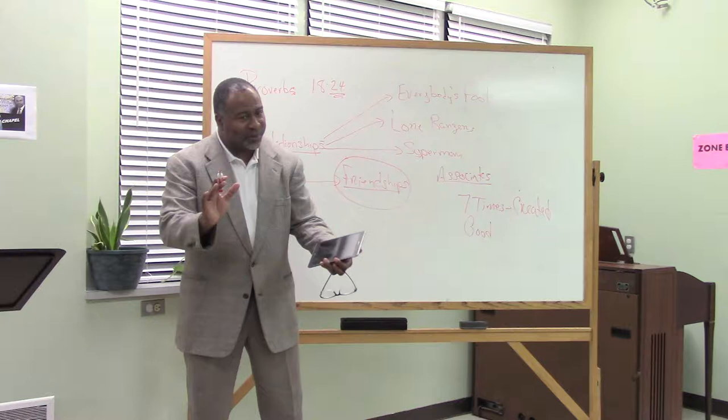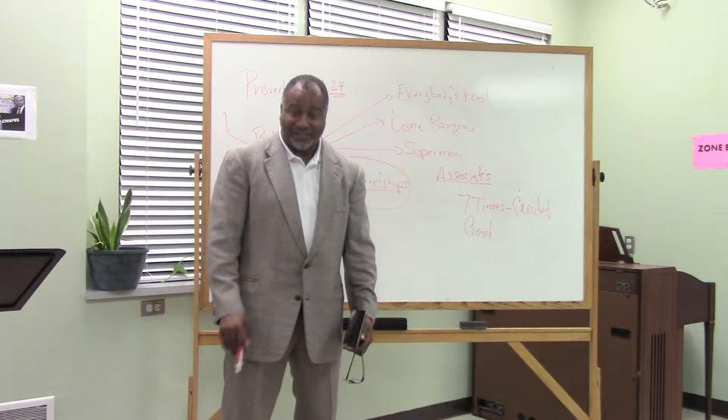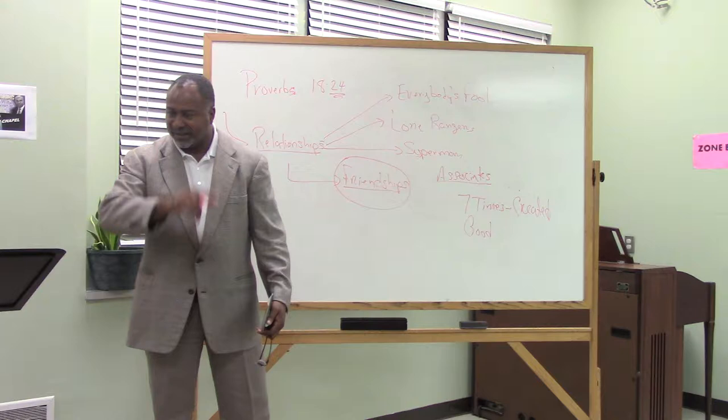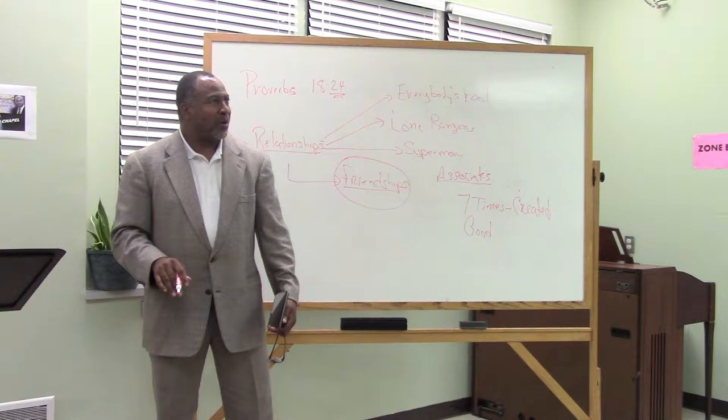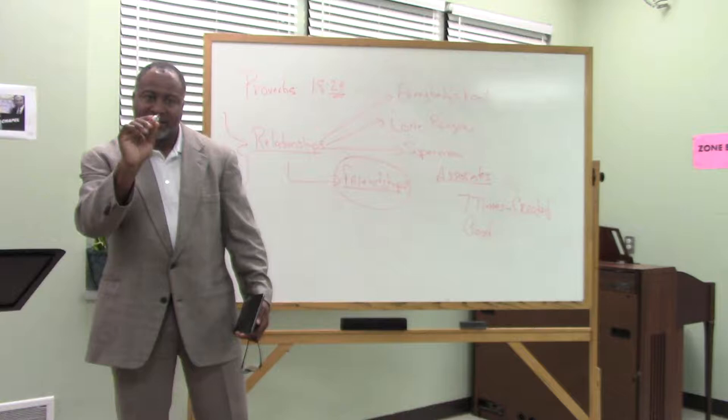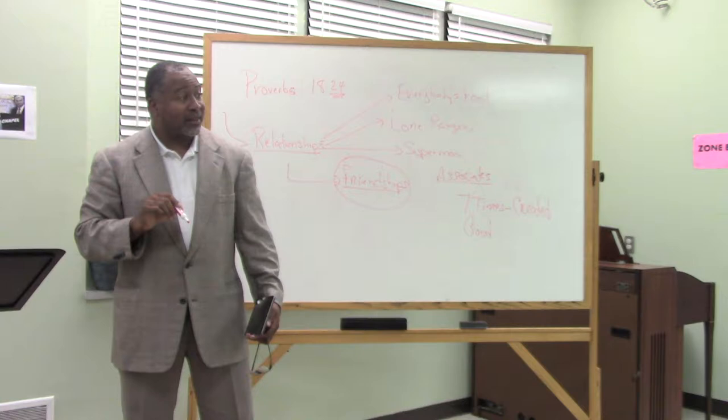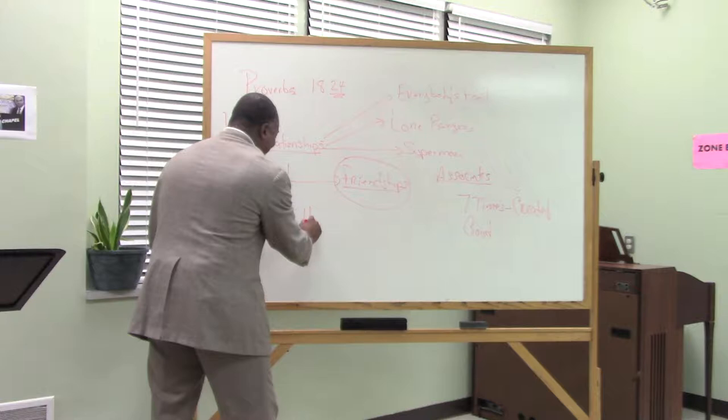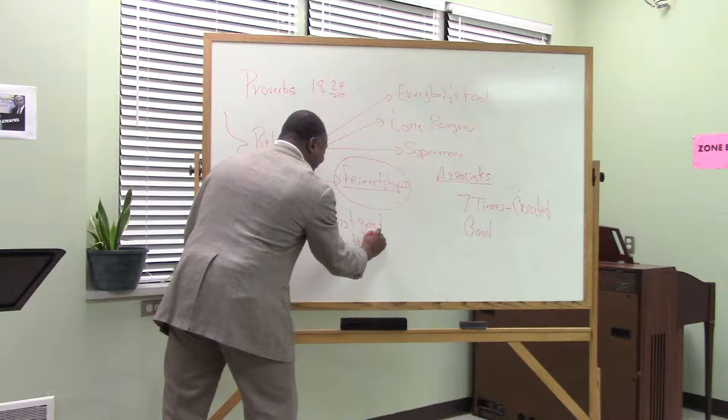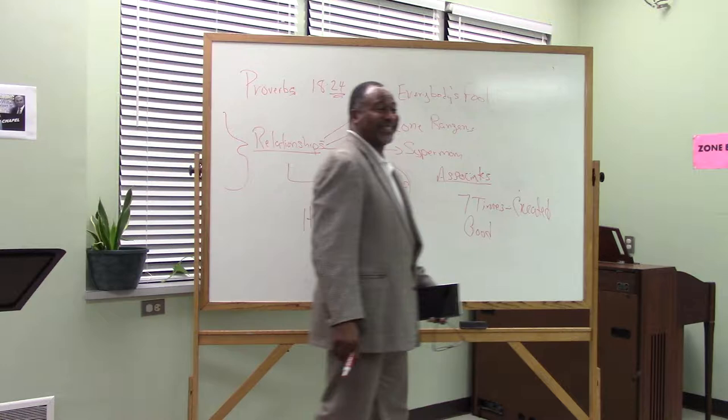When he created Adam, he says nothing. Isn't that something? Now his crowning creation, he made a tree and he said that's good. He made a rhinoceros, that's good. He made the Euphrates, that's good. Made the stars, the moon, that's good. But when he created Adam, he burped. You never see in Genesis where he said when he created Adam it's good. Other than in Genesis he says it is not good for man to be alone.